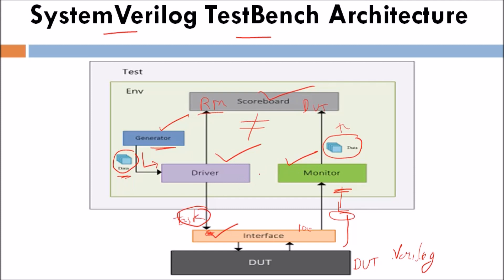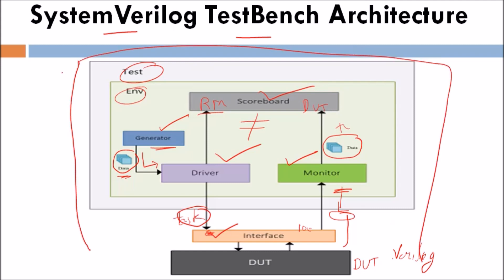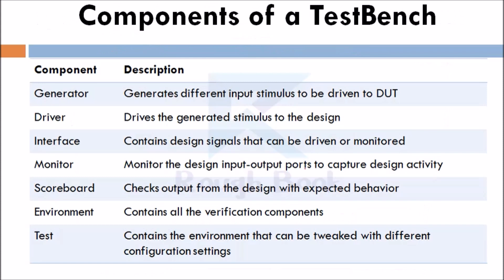Next is about the test. The test contains the environment that can be tweaked with different configuration settings. There is also a top module — the testbench top module — which is the topmost file that connects the DUT and the testbench. So this top module will connect both the DUT and the testbench.